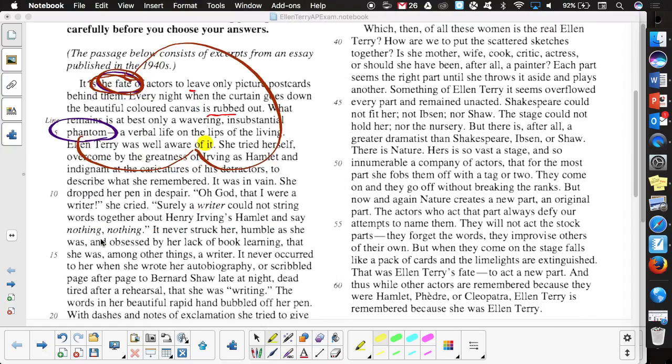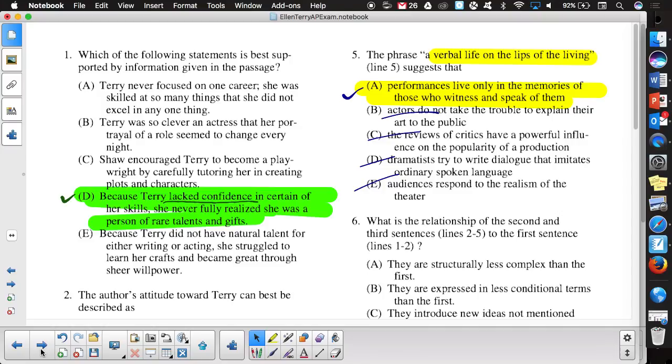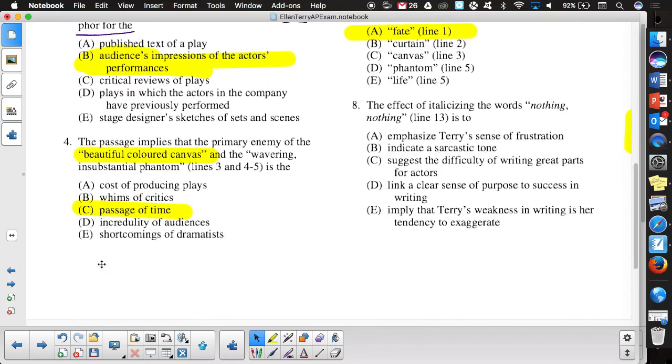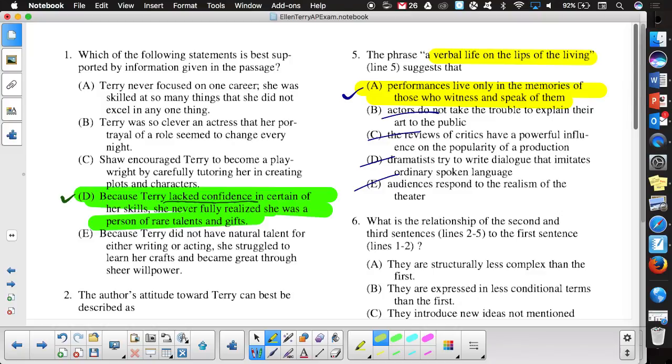Line 13. Nothing, nothing. She dropped her pen in, take note, we got despair. Oh God, that I were a writer, she cried. Surely a writer could not string words together about Henry Irving's Hamlet and say nothing, nothing. It never struck her, humble as she was, obsessed by her lack of book learning, that she was, among other things, a writer. Why say something twice, with emphasis? To emphasize. To emphasize what? Her sense of frustration. Okay. Why did Kurtz say the horror? The horror? To emphasize the horror. With what? We're not exactly sure since we never know what it was. But yep, lack of frustration, not lack of frustration, sense of frustration with her overall writing. That part there is one of the main clues that would help you with number one, letting us know she lacked that confidence because she didn't realize that she could write.